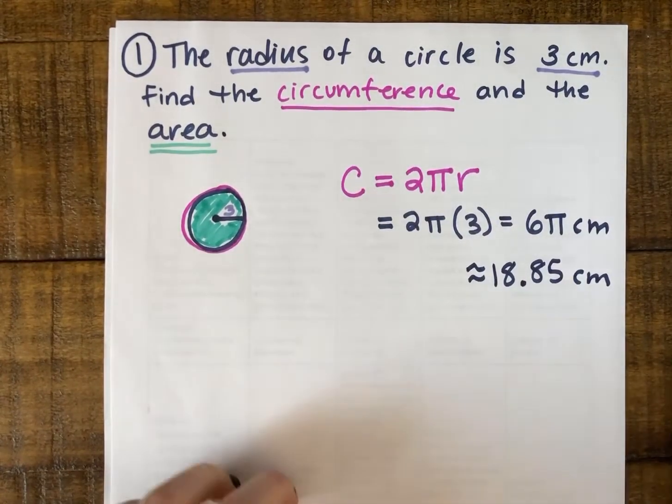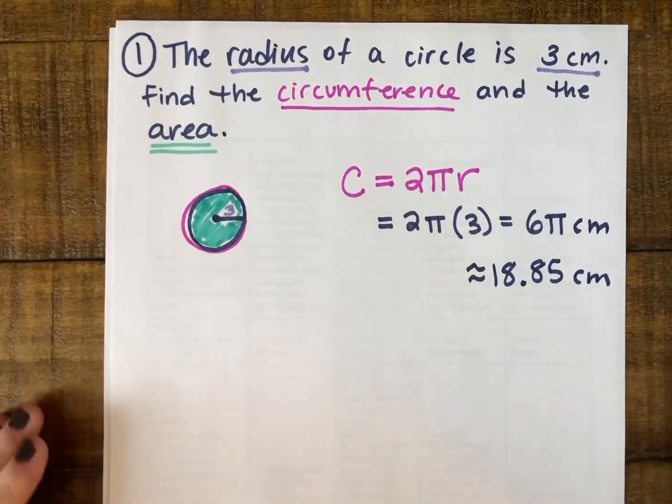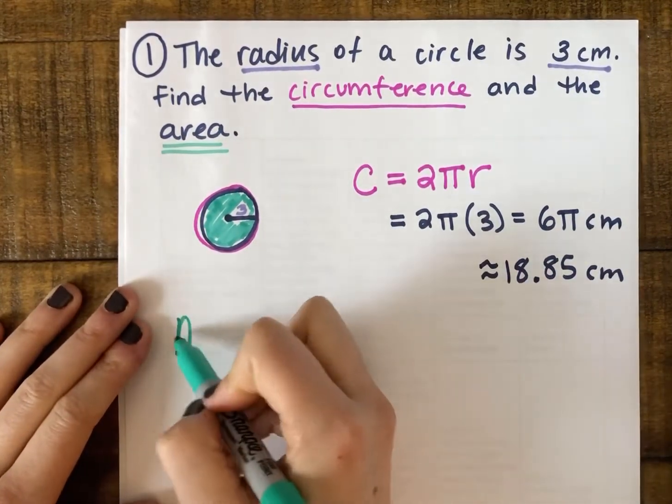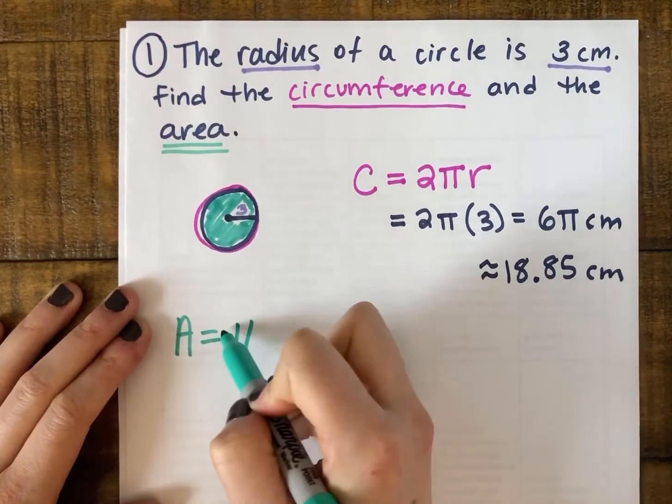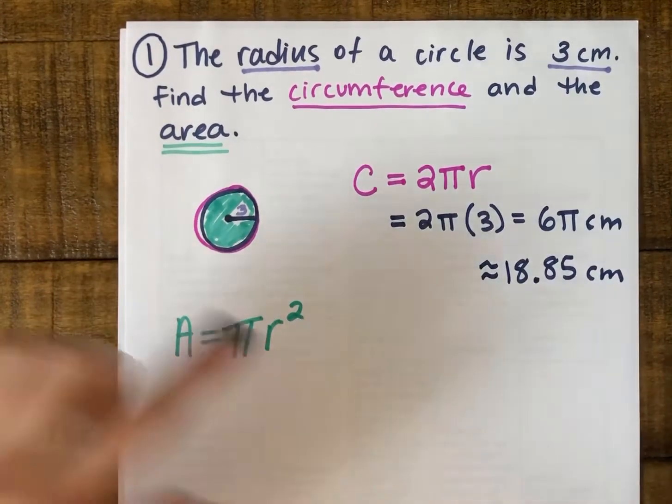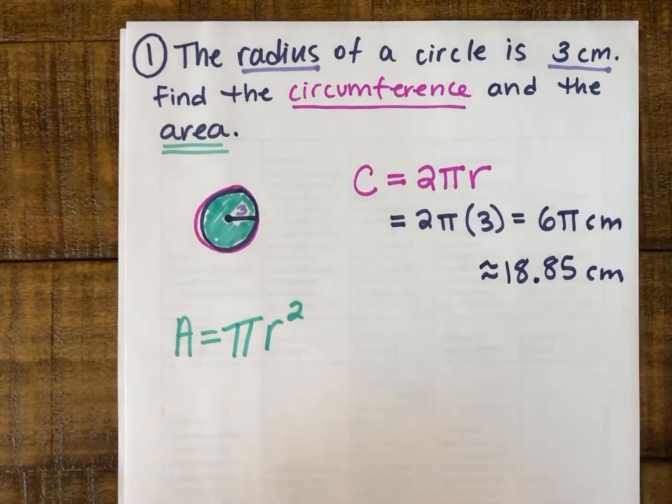Area also has a formula that has to do with the radius. The area is equal to π times the square of our radius, A = πr². We figured out that formula last week by actually making squares that were the length of our radius.